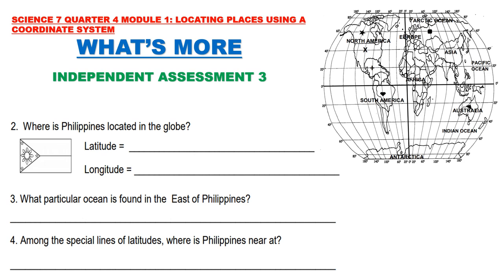After filling out the table, answer questions two through four: Where is the Philippines located in the globe? What particular ocean is found to the east of the Philippines? And among the special lines of latitude — equator, Tropic of Cancer, Tropic of Capricorn, Arctic Circle, and Antarctic Circle — which one is the Philippines nearest to?